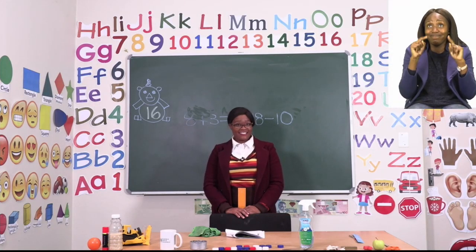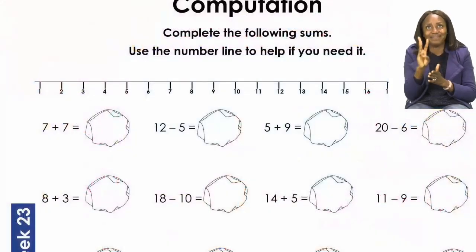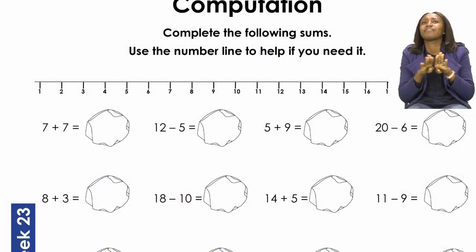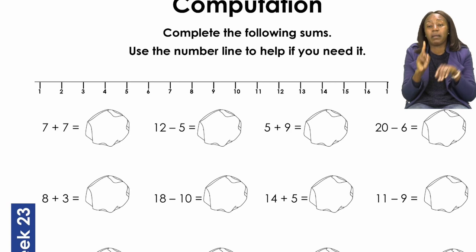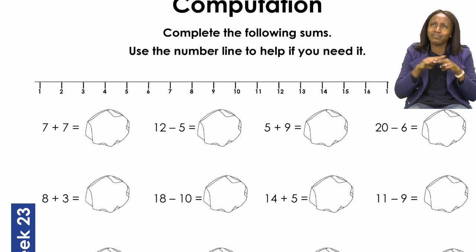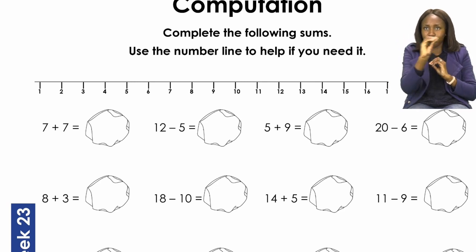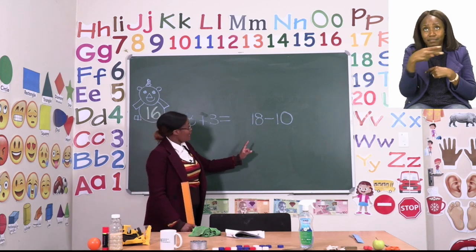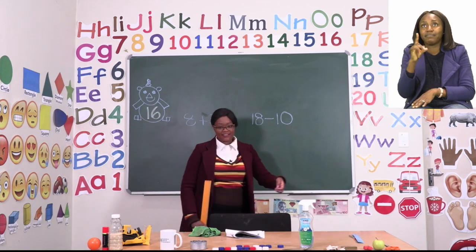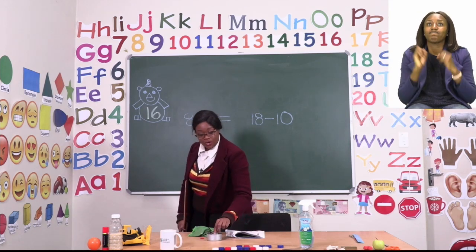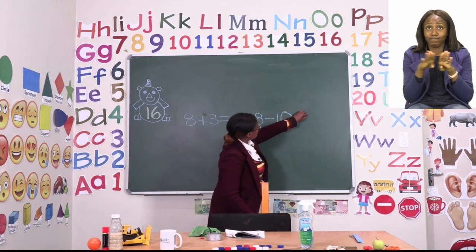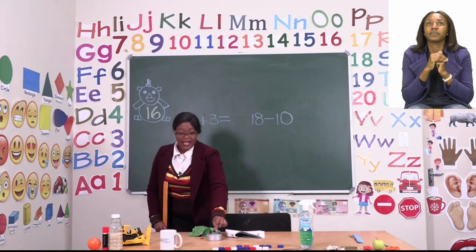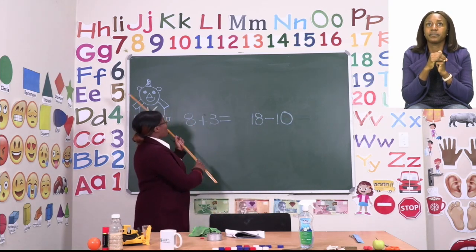Now, to end our lesson, boys and girls, let's all go to page 16. On page 16 we are going to be completing some computations. It's going to be our job to use our number line to solve the following sums. We're only going to do two together, so let's take a look at the board. The two we're going to be doing are 8 plus 3 equals, and then 18 minus 10. I want you to follow me on your number line — the one I have around the whole classroom.